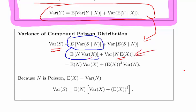We have the expected value of N times the variance of X, times the expected value of X squared, times the variance of N.